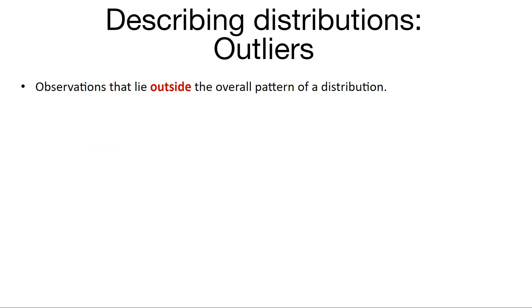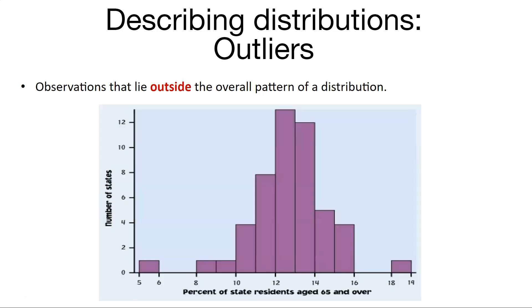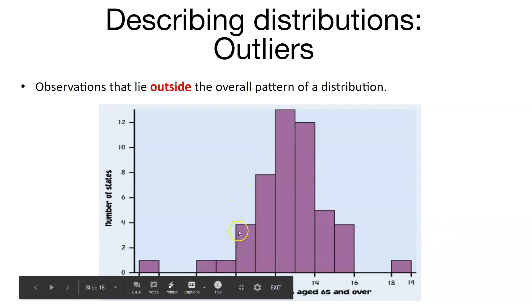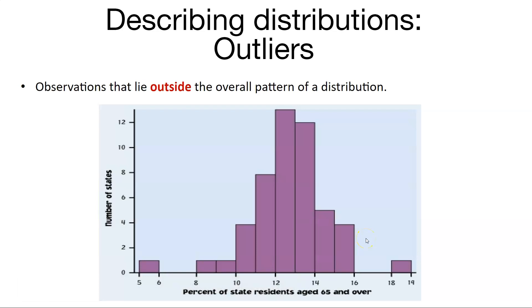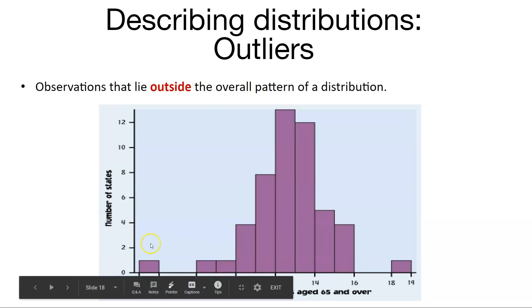We'll also talk about outliers. And now there are specific ways we can actually quantify whether or not a data point is an outlier or not. But for now, we're just going to see whether or not some data sets or some data points in the data set fall outside the overall pattern of a distribution. Here's an example of the number or the percentage of state residents that are age 65 and over. And so this is an important data set. We might be concerned with retirement benefits for those senior citizens over 65 years of age. And we might be interested in saying, okay, well, what states have the most senior citizens? Well, if we look at this distribution, it's interesting because most of the data are within these values here. So between, say, 8 and 16 percent of state residents are 65 and over.